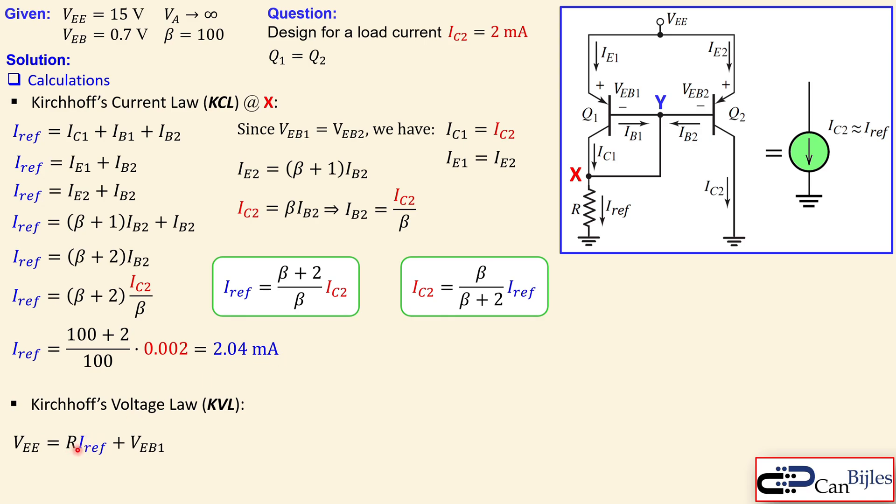That's actually also what we want to calculate for our design. So we can rewrite R is equal to VEE minus VEB1 over the reference current. And that is now given here. So 15 minus 0.7 over this 2.04 milliamps. And you get now 7010 ohms.